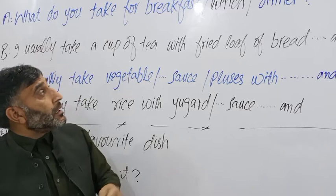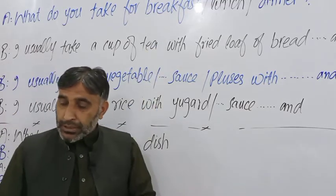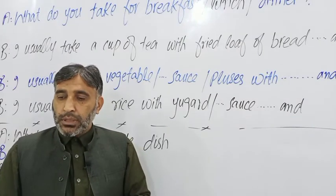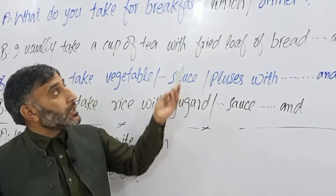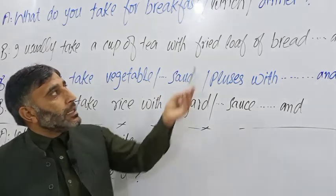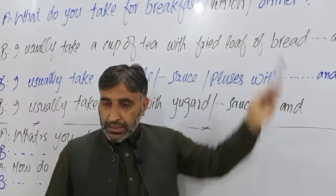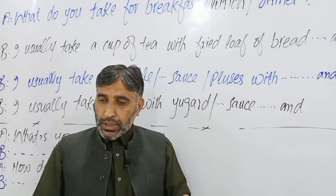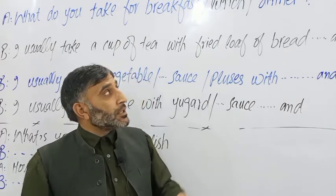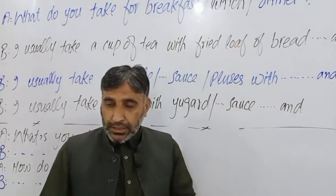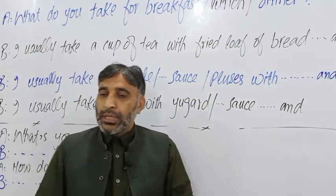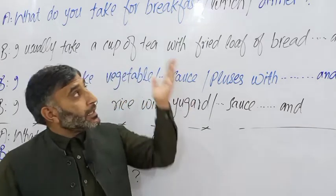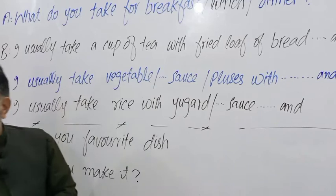Besides breakfast, lunch, and dinner, there is also brunch — 'chashit ka khana' — the meal taken around 10 to 11 in the morning. And supper also exists, which comes a little before dinner. In the later afternoon — around the time of Asar or after Zohar — when we have tea or a light snack, that is called supper. So there are 5 types of meal times, but these 3 are most common, and we will discuss these three.